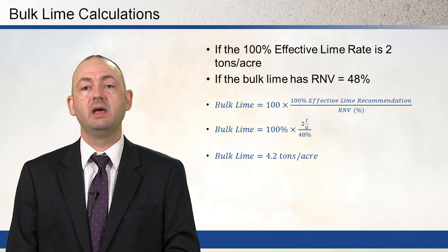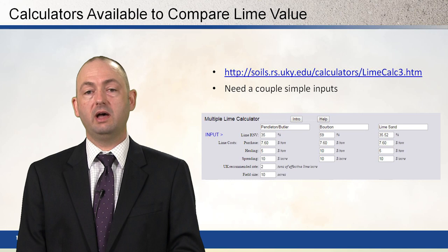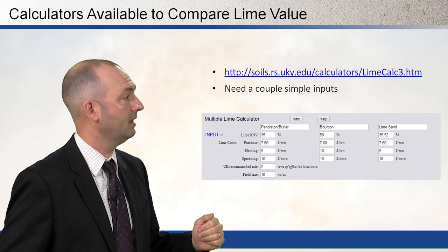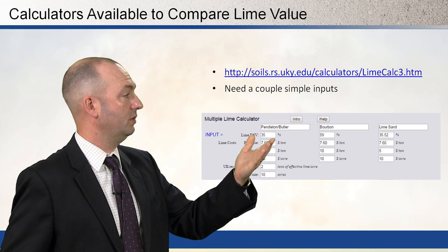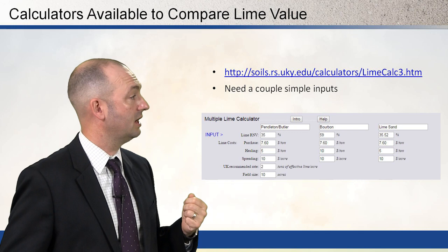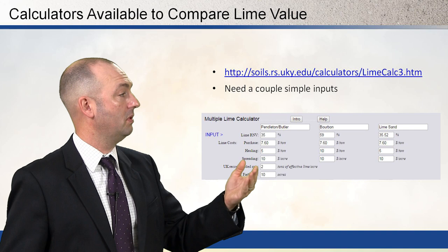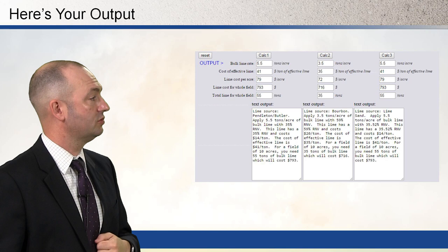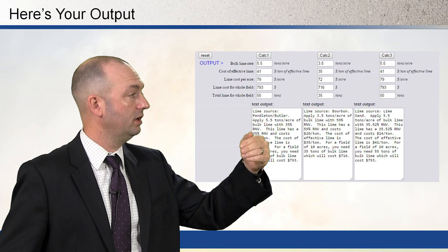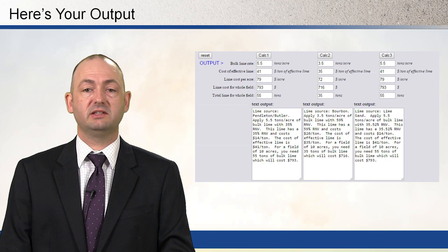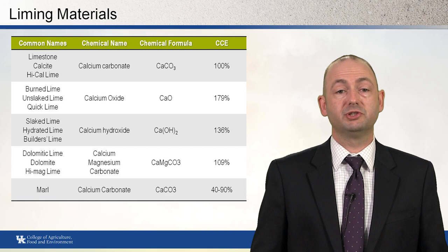Multiple calculators are available on the web to compare lime values. One example from the University of Kentucky Soil Testing Lab requires simple inputs: lime source, RNV, purchase price per ton, hauling cost, spreading cost, and the soil testing lab's effective lime recommendation. The output shows the cost per acre for each product. Sometimes it is cheaper to use the less effective lime; in other situations, a more effective lime is more economical.